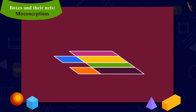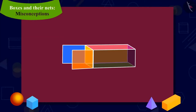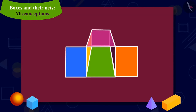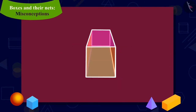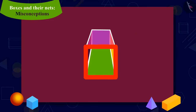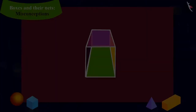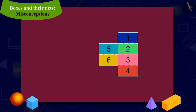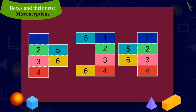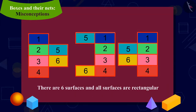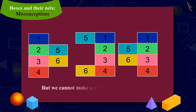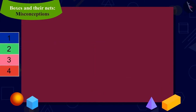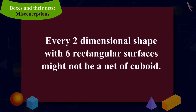Let us try to fold this cardboard cutout. Here, the two left surfaces are covering the same part of the box, while there is no surface on this part of the box. Thus, we are not able to make a cuboid-shaped box. Kids, is it possible to have more such shapes which have six surfaces and all surfaces are rectangular, but we cannot make a cuboid by folding them? Every two-dimensional shape with six rectangular surfaces might not be a net of a cuboid.